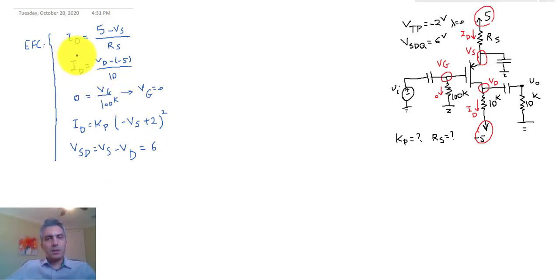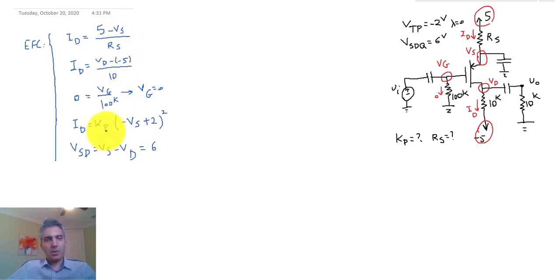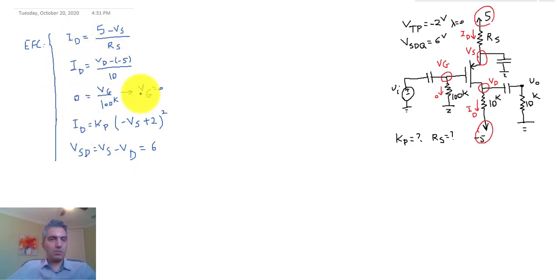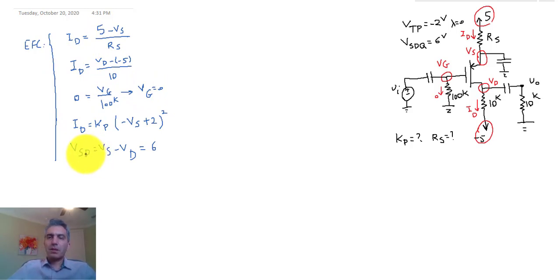Counting the unknowns: ID, VS, RS, KP, and VD — that's five unknowns. But we only have four equations. This means there is one degree of freedom in this design problem: you can choose the value of one unknown and calculate the rest.